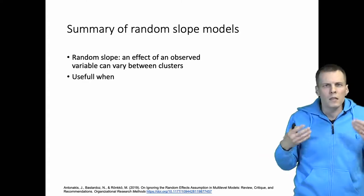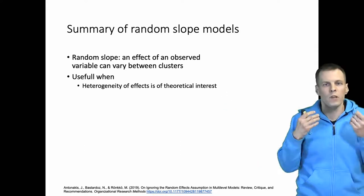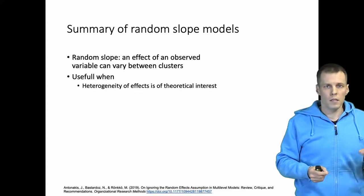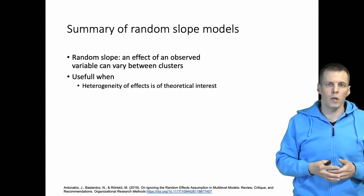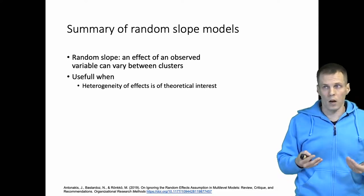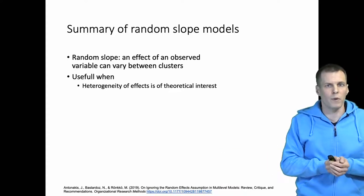These are useful when we have heterogeneity of effects that is of theoretical interest. If you want to understand how much trends vary between units, then a random slope model is a useful technique for that kind of question, as demonstrated by the Holcomb paper that I showed on the previous slide.